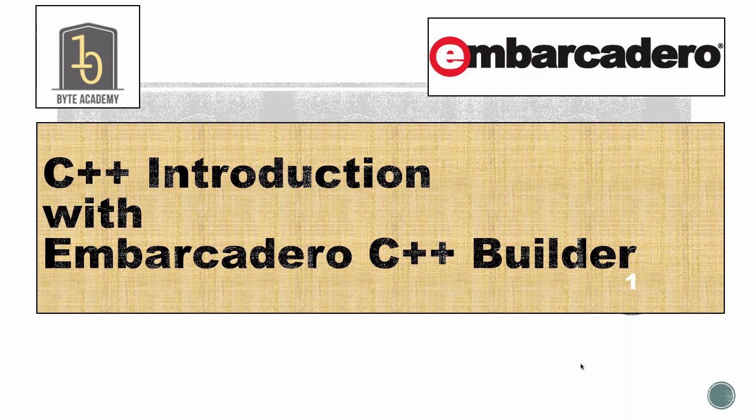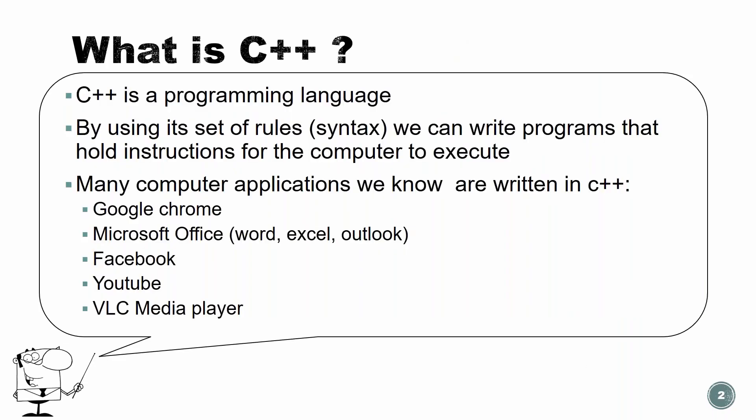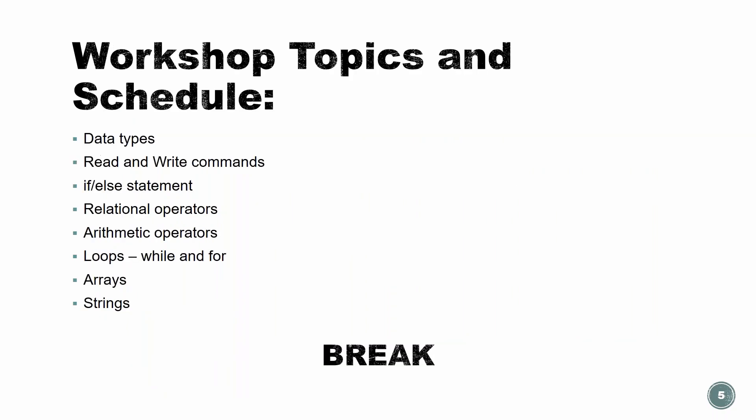So what is C++? C++ is a programming language, and by using its set of rules — which are the syntax — we can write programs that hold instructions for the computer to execute. Many computer applications we know are written in C++: Google Chrome uses it, Microsoft Office and all their products use it, Facebook, YouTube. It's a very powerful and widely used programming language.